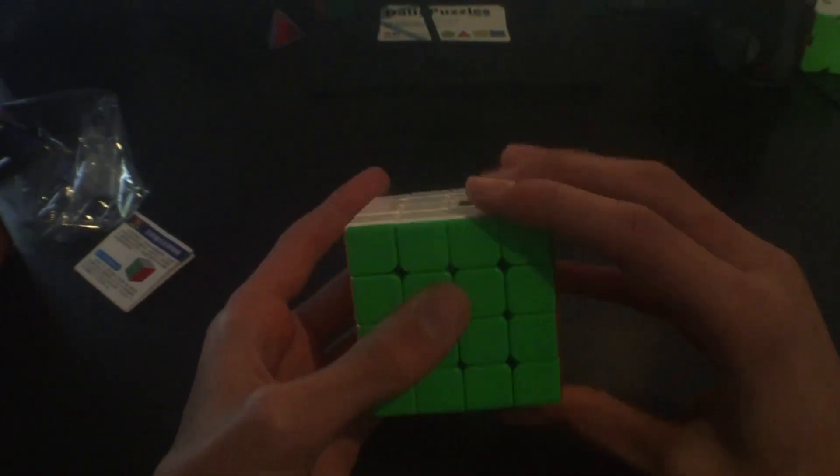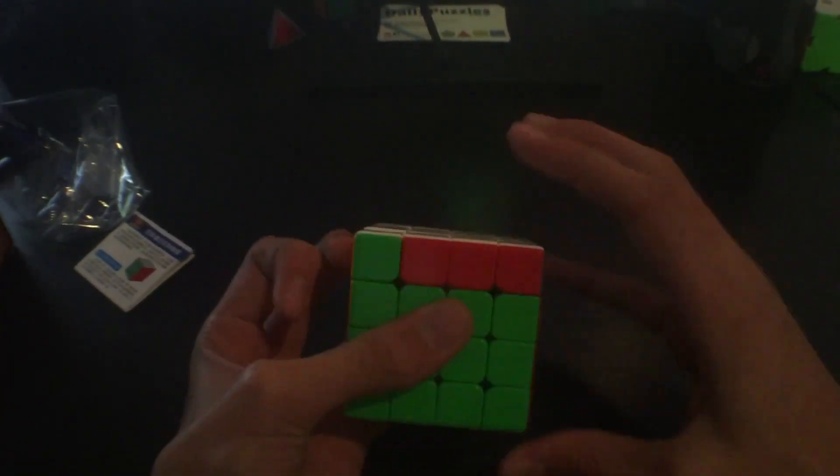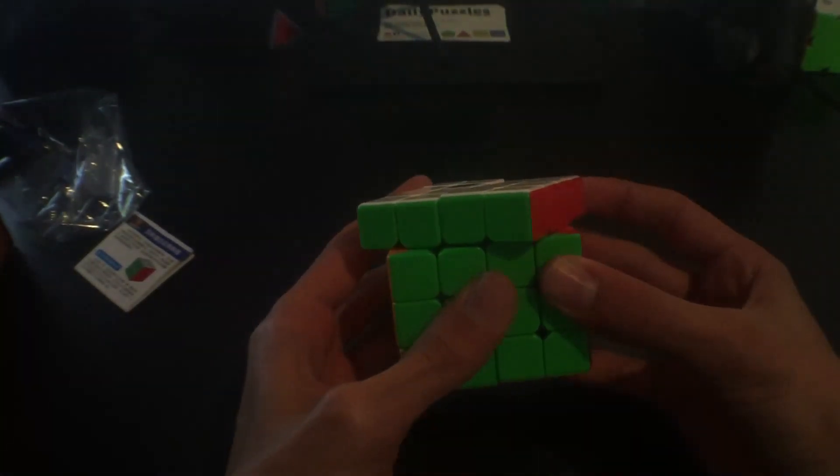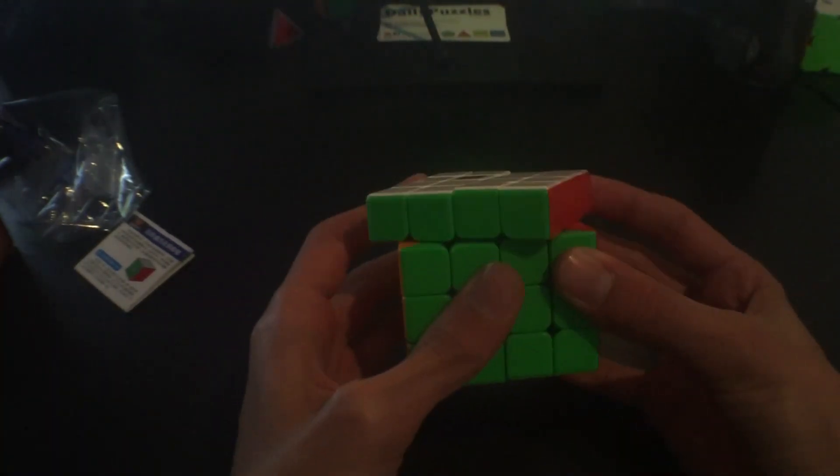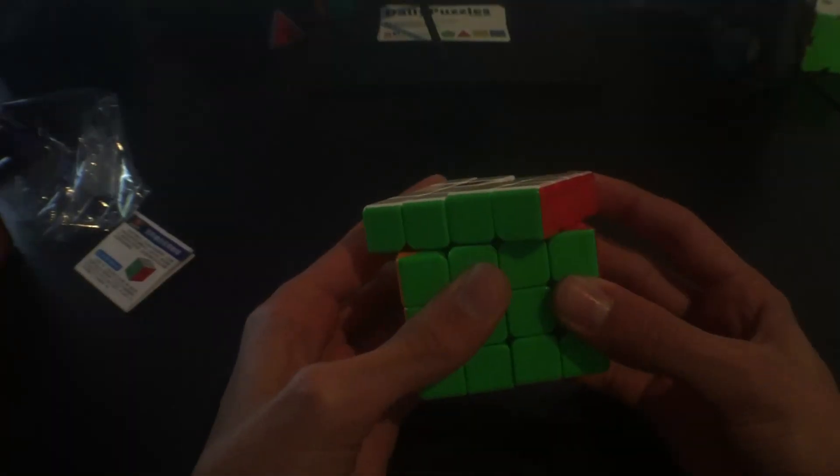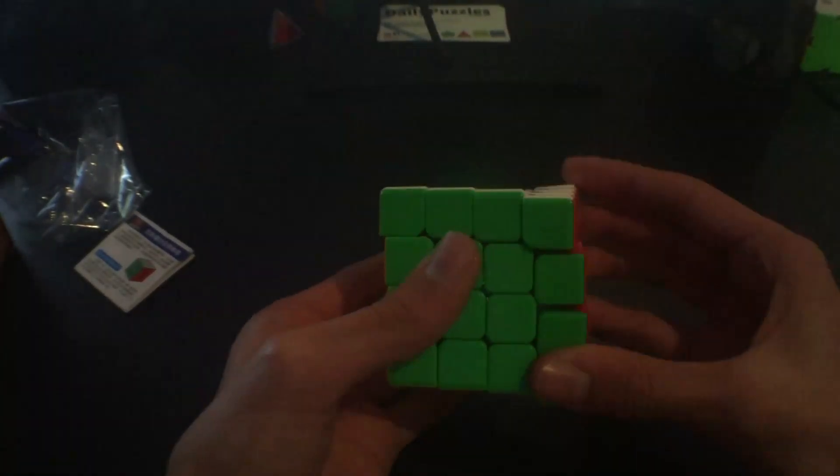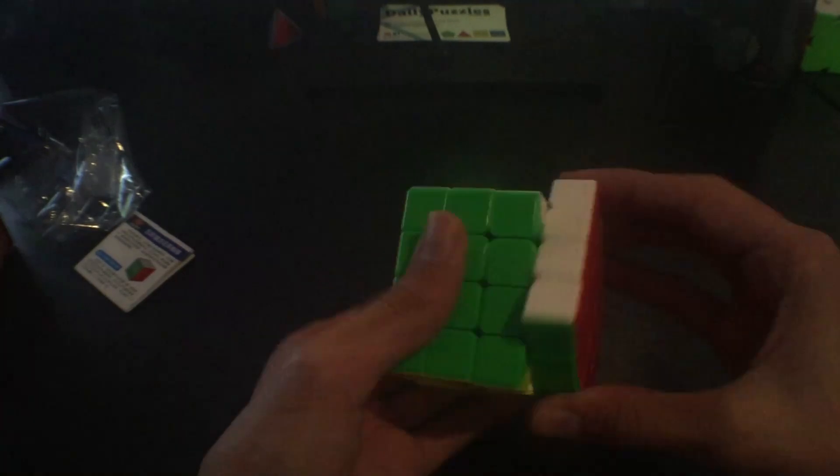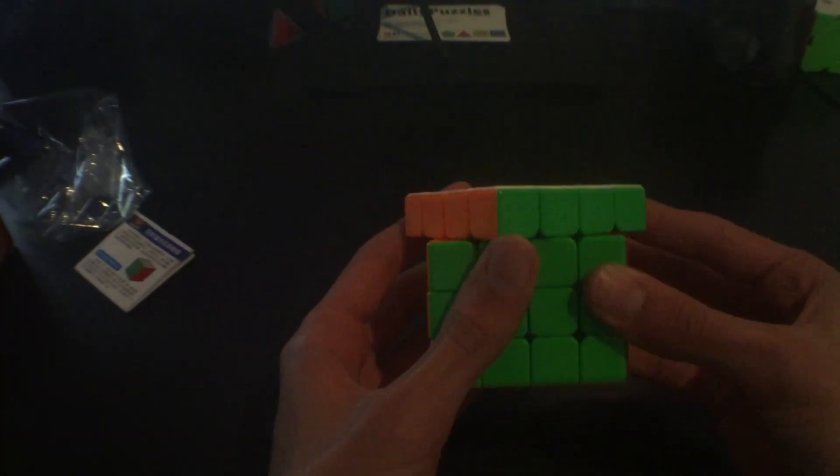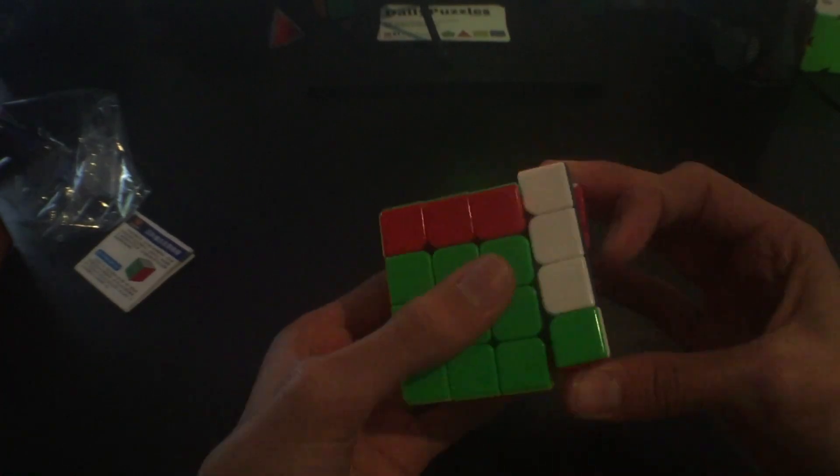This cube is really nice, it's pretty smooth, turns very quietly which is nice. Let's check the corner cutting. Okay, so corner cuts very well, up to about line to line which is nice. Reverse cut, okay not so much but that's expected for a 4x4. Very nice cube, it's super smooth.